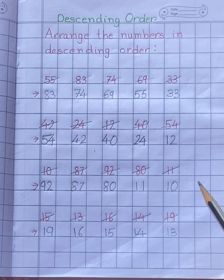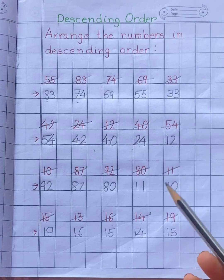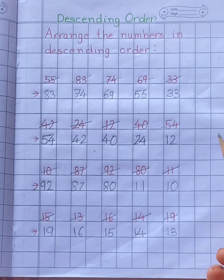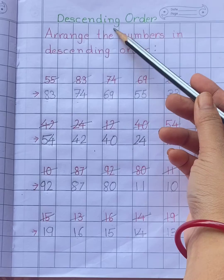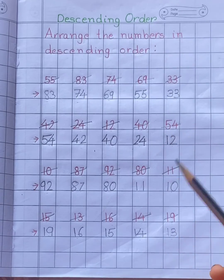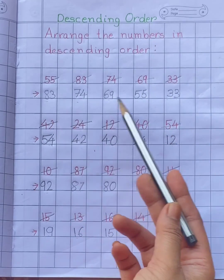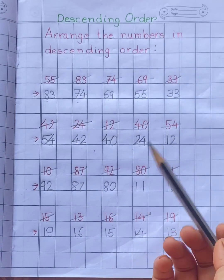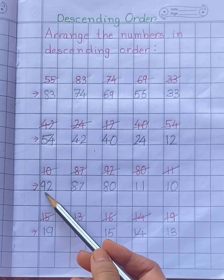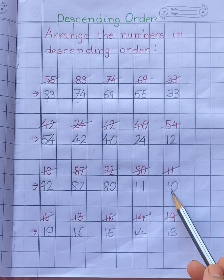So children, I hope you understood the concept of descending order. Descending order means arranging numbers from big to small.